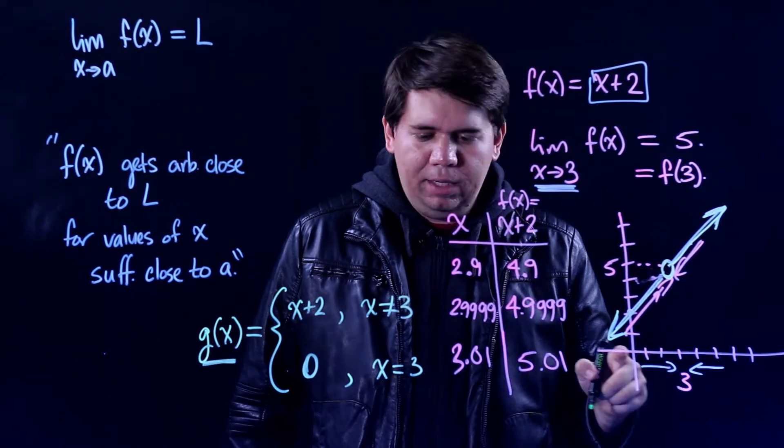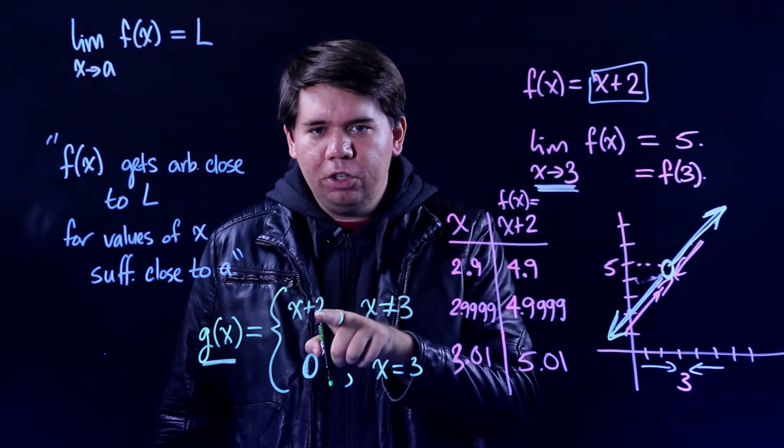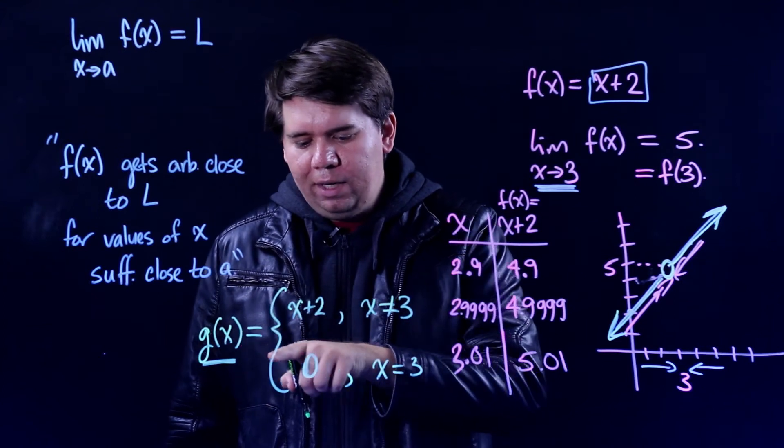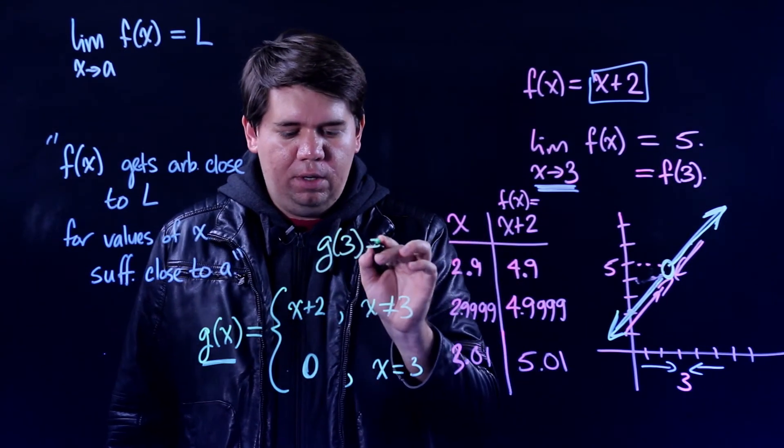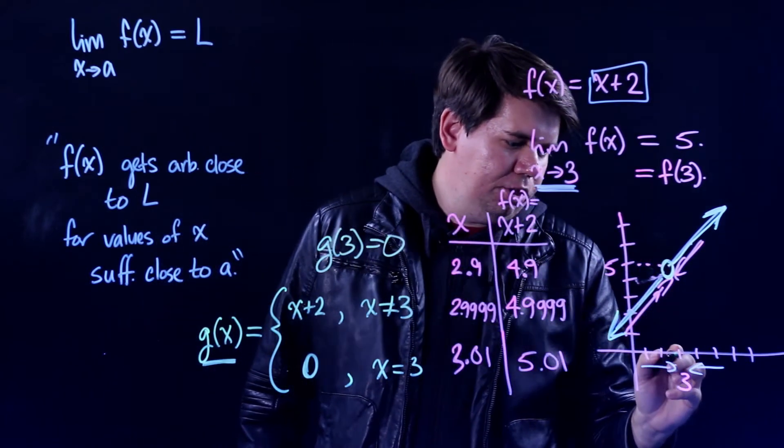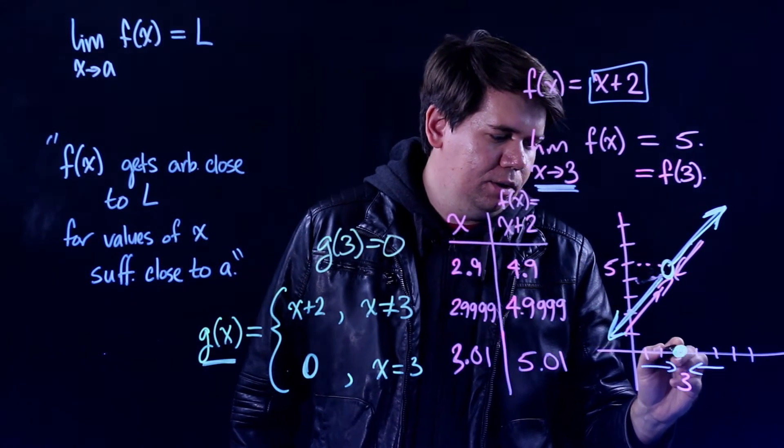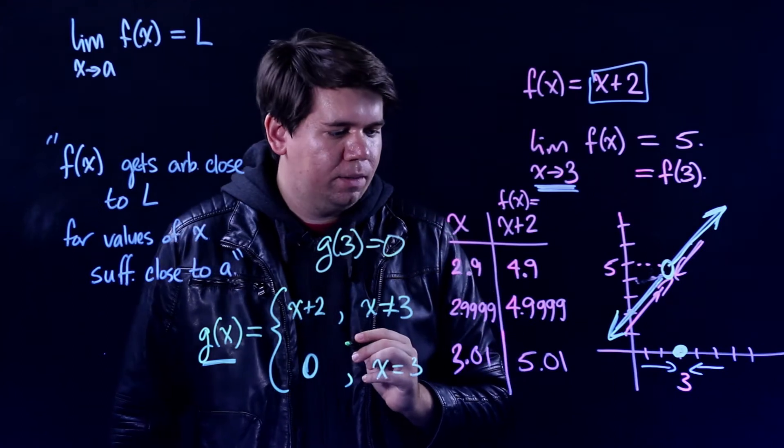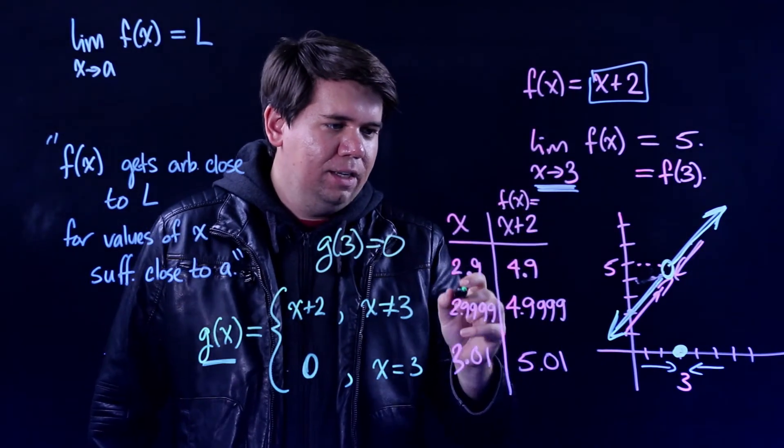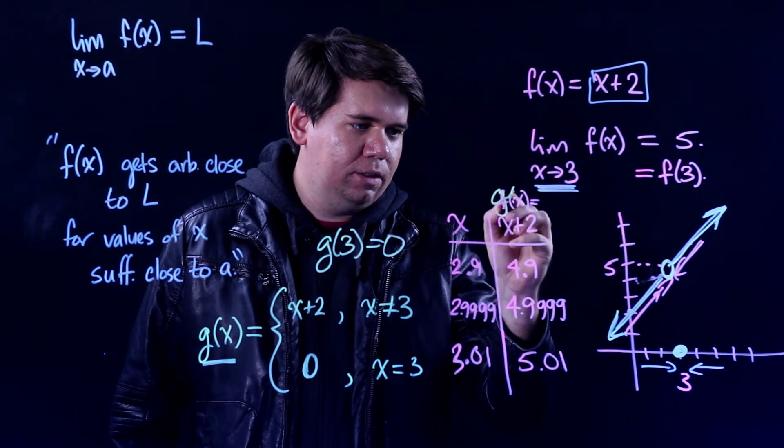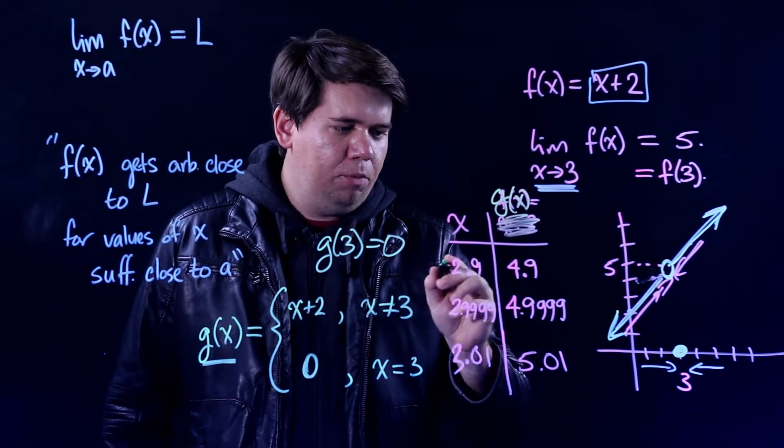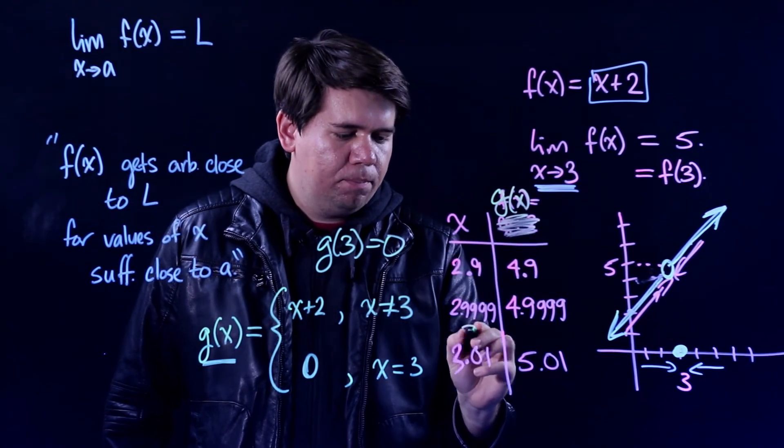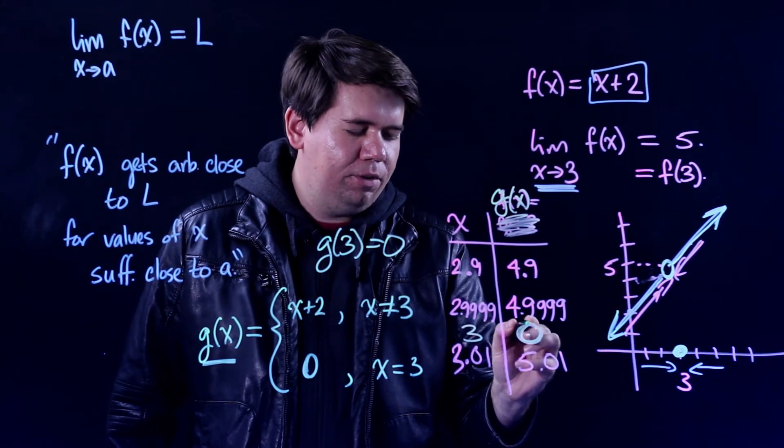At 3, when you plug in 3, you don't get out 5—you don't plug it in here. When you plug in 3, you get out g of 3, you get out 0. So at 3 you get (0, 0). So if you looked at this table for g of x, it would give you all the same values, but at 3 it would give you 0.